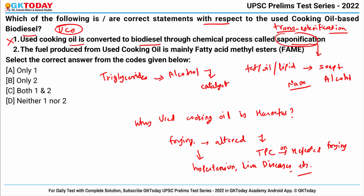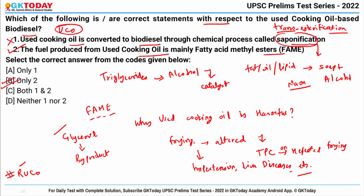Statement two says the fuel produced from used cooking oil is mainly fatty acid methyl esters (FAME). In this process, the fuel is indeed produced in the form of FAME — fatty acid methyl esters — and glycerol is an important by-product. So this is correct and the right answer becomes option B. There is also an initiative called RUCO (Repurpose Used Cooking Oil) by FSSAI — Food Safety and Standards Authority of India — to collect and convert used cooking oil into biofuel.